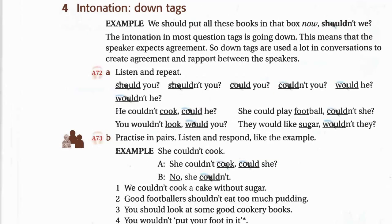4B / 4A tag question drills: Should you? Shouldn't you? Could you? Couldn't you? Would he? Wouldn't he? He couldn't cook, could he? She could play football, couldn't she? You wouldn't look, would you? They would like sugar, wouldn't they?